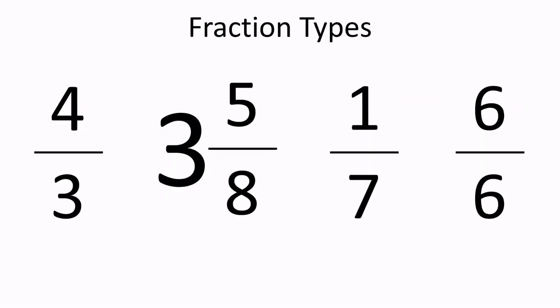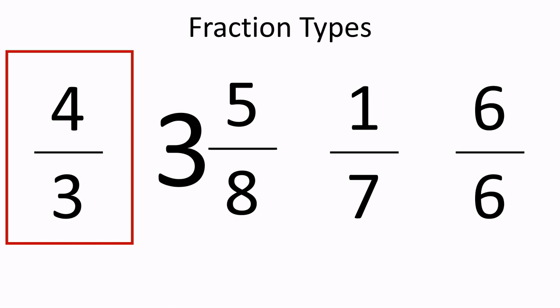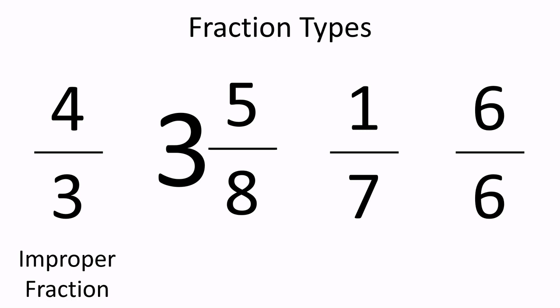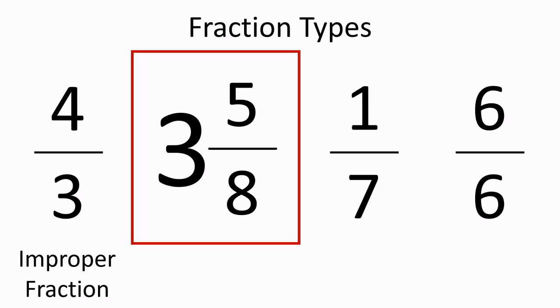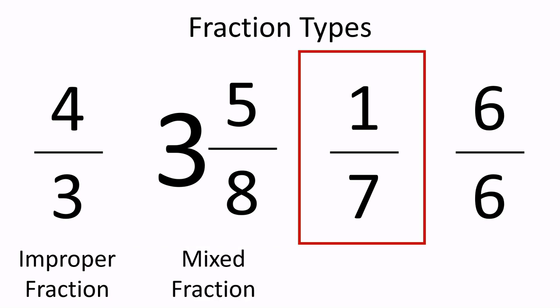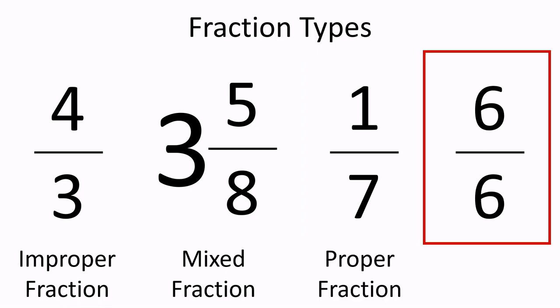Let's practice recognizing fractions. In the first fraction, the numerator is greater than the denominator, so this is an improper fraction. In the second fraction, we have a whole number and a proper fraction, so this is a mixed fraction. The third fraction has the numerator smaller than the denominator, so this is a proper fraction. The last fraction has the numerator and the denominator equal, so this is an improper fraction.